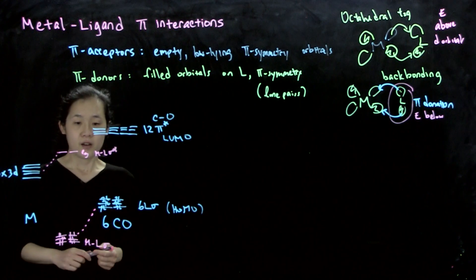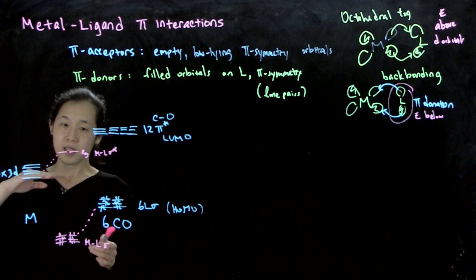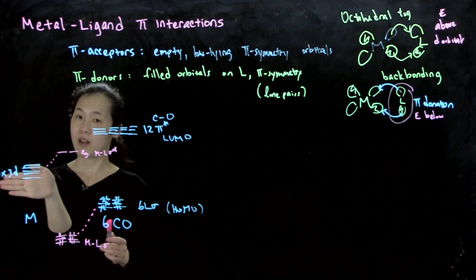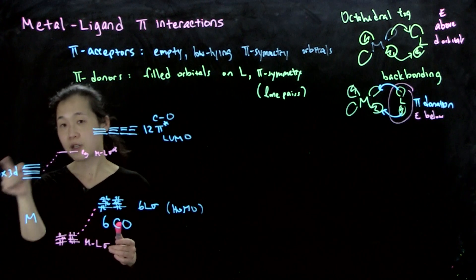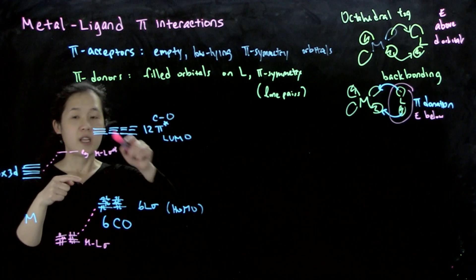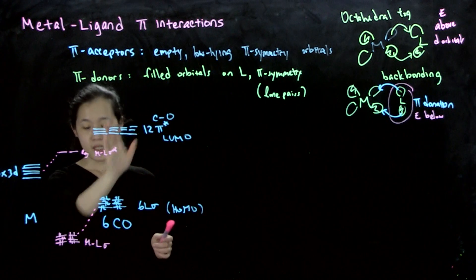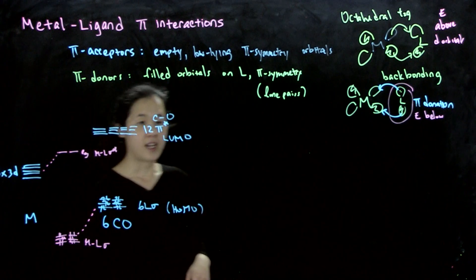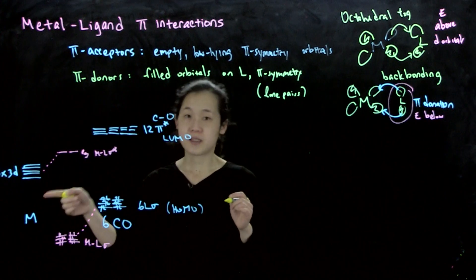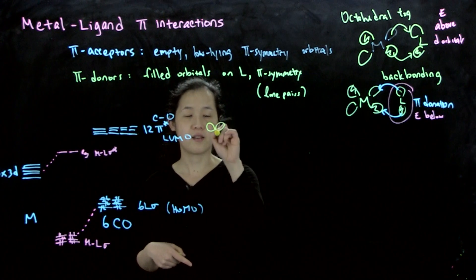Before, when we had sigma-only ligands, the remaining d orbitals — the t2g — stayed at the same energy as the free d orbitals because they didn't interact; they were non-bonding. But now we have these CO pi star orbitals up here, and these orbitals can interact with our dxz, dyz, etc., in that fashion.